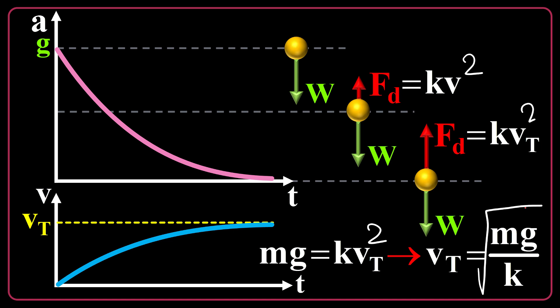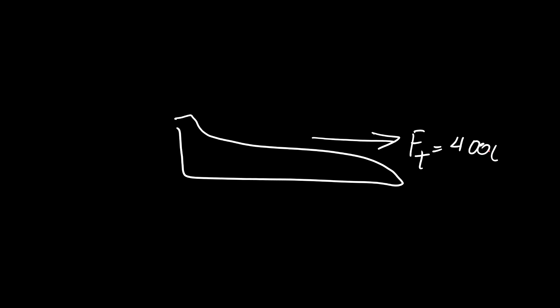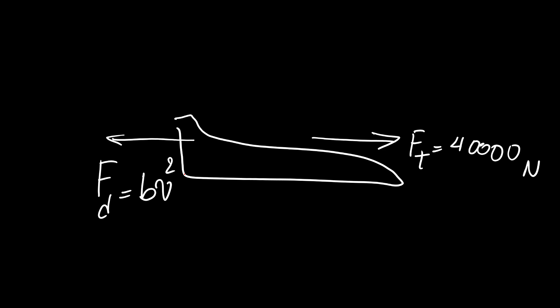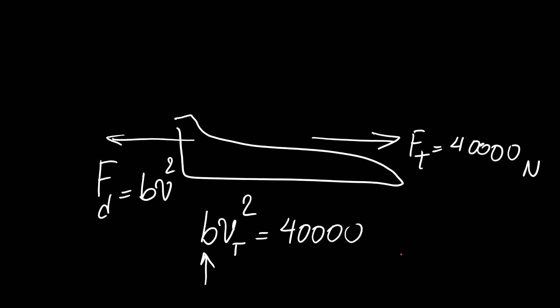What about the airplane or car? It is very similar. If the thrust force is 40,000 newtons and the drag force for the airplane is bv squared due to its high speed, then at terminal speed: bv_t squared equals 40,000. Given the value of b, you can easily find the terminal speed for the airplane.